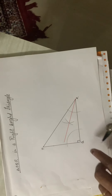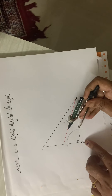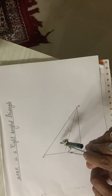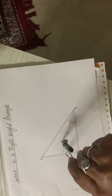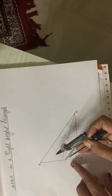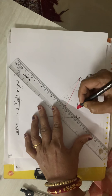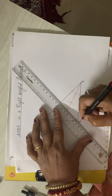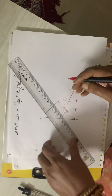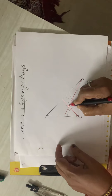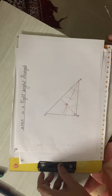For drawing the bisector of angle Q, again we will draw two arcs. The point of intersection of the two angle bisectors is the in-center.